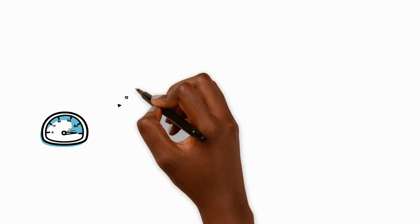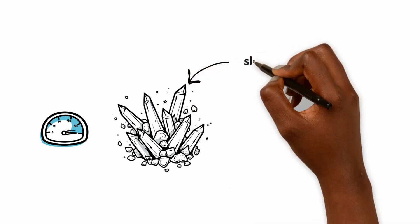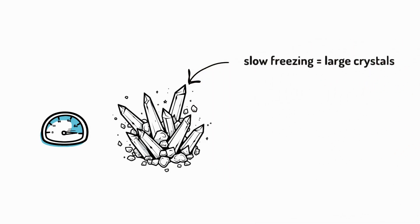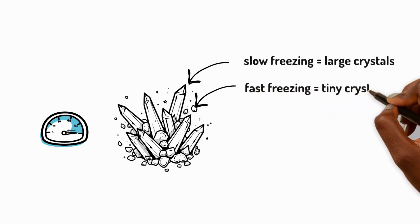The speed at which something freezes is also important. Slow freezing makes large solid crystals, while fast freezing makes small crystals.